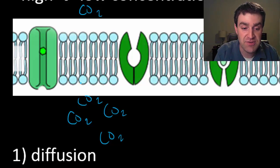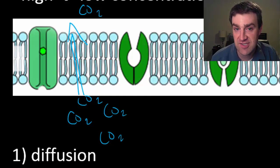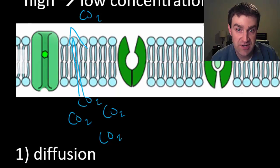And so through simple diffusion, because carbon dioxide is a small nonpolar molecule, it would be diffusing out of the cell in passive transport.